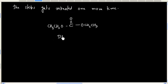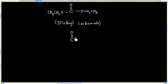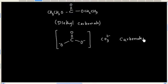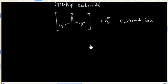Now this is called diethyl carbonate. You may remember this is carbonate ion. So we are simply replacing the negative charge with ethyl group, and that's why this is called diethyl carbonate.